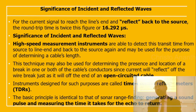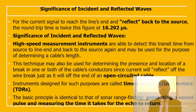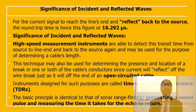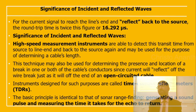High-speed measurement instruments can detect the transit time from the source to the line end and back, and may be used to determine the length of the cable. This technique can also be used to determine the presence and location of a break in one or both cable conductors, since current reflects off a wire break just as it does off an open-circuited cable end. Instruments used for this purpose are called time domain reflectometers.